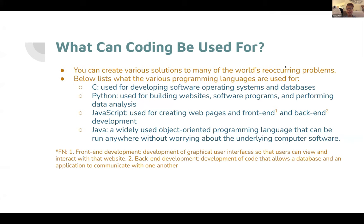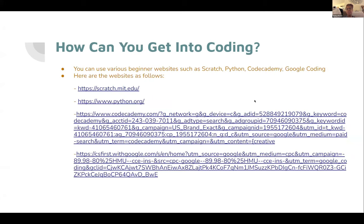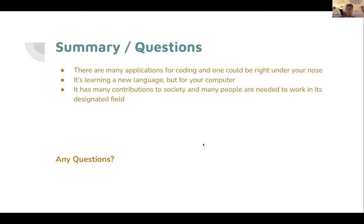How can you get into coding? You can use various beginner websites such as Scratch, Python, Codecademy, and Google Coding. She personally used Scratch in a girls coding club in middle school — it's a good website for beginners because it breaks down everything to an elementary level, giving you a better grasp before moving to more advanced platforms like Python. There are many things for coding and one could be right under your nose. It's like learning a new language but just for your computer, and it has many contributions to today's society with many people needed to work in its designated field.